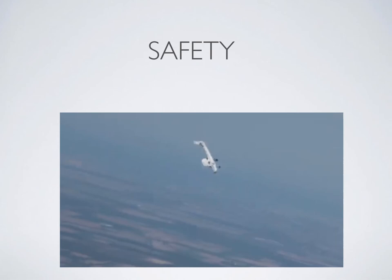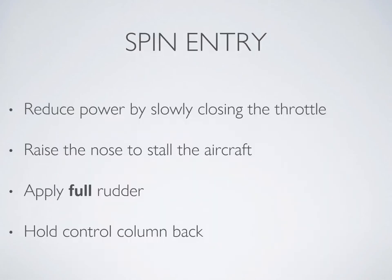This is upper air work, so make sure you do your safety checks before attempting this maneuver and make sure you're in a safe area. It's very likely that you'll lose between 500 to 1000 feet in this maneuver. Make sure all loose items in the aircraft are secure and triple-check seat belts and doors. To enter a spin, follow the same process as entry into a power-off stall, with the exception that when you lift the nose to stall the aircraft, you also apply full rudder.